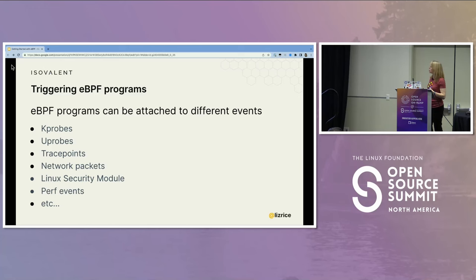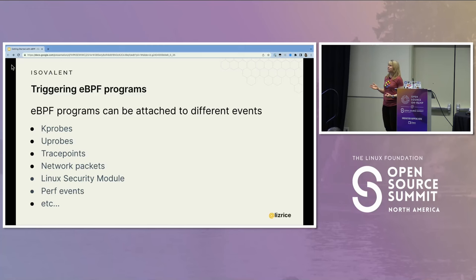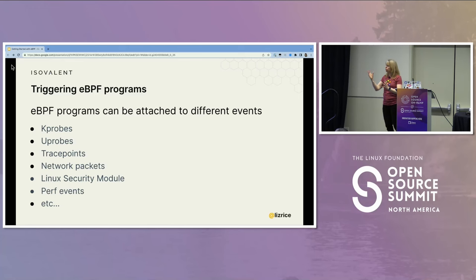K-probes and U-probes are essentially functions within kernel or user space. Trace points exist in the kernel, and you can also attach to trace points in your application. You can attach to network packets arriving at different points in the stack, and to the Linux security modules — things like AppArmor or SELinux use the Linux security module API, which we can use to trigger eBPF programs. There are also perf events for measuring performance and all sorts of other things.